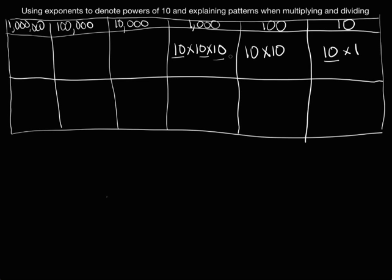We want students to start seeing the pattern that's forming. For 10,000, it's just 10 times 1,000, so we take 10 times 10 times 10 and multiply by another 10. Every time we move to the left on our place value chart, we're multiplying by another 10. Also, looking at 100: two factors of 10, and two zeros in 100. We could do 100,000 and a million, but for now we'll move on to exponents.